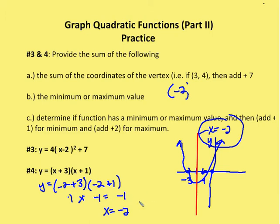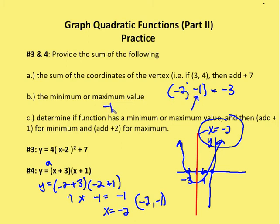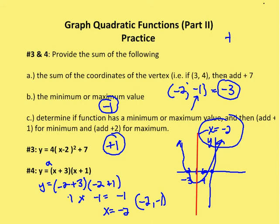The sum of the coordinates of the vertex (−2, −1) is equal to negative three. Does it have a minimum or maximum value? The a value is one and positive, so the graph faces up, meaning it has a minimum value. That minimum value is the y-component of the vertex, which is −1. So I add −3 (sum of vertex coordinates), then −1 (minimum value), then +1 (for minimum). My total for number four is negative three.